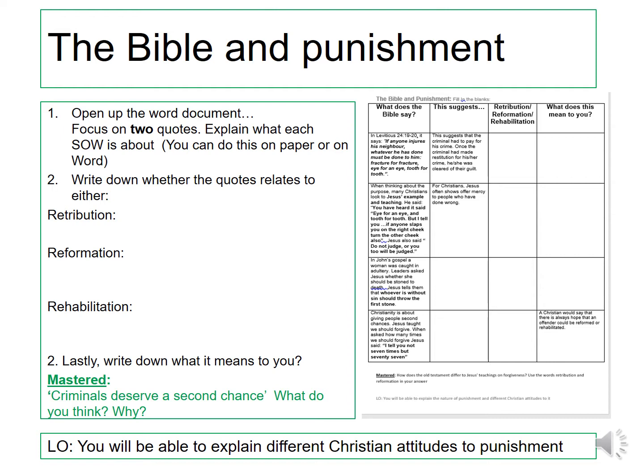The word Retribution means a repayment — it's a deserved punishment, a like-for-like punishment. For example, in the US you have capital punishment if you commit the crime of murder, so it's like for like: if you kill someone then the punishment should be that your life is taken away too. In the UK we do not have that — we have life imprisonment for example.